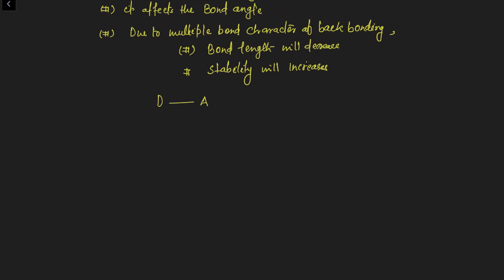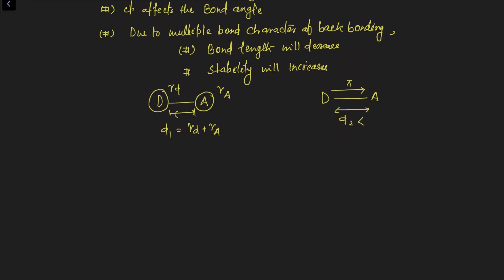For example, consider a donor atom D and acceptor atom A with a single bond. Let the radius of the donor be rd and the radius of the acceptor be ra. The bond length d1 = rd + ra. But if a back bond forms between D and A — introducing pi bonding — then the new bond length d2 will be less than rd + ra. In the presence of multiple bond character, bond length decreases.